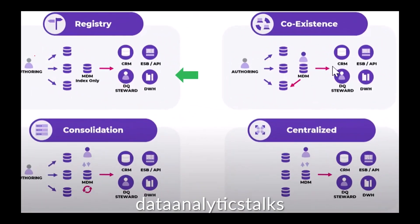Let me focus on the registry hub. We have authoring, we have MDM, and we have different systems — internal or external systems such as CRM, ERP, API, data warehouse, and DQ steward. An MDM system implemented using the registry style provides a read-only view of the master data for downstream. The registry style gives only a read-only view. The MDM hub stores only a thin slice of MDM data — the entire data is not stored in the hub. That thin slice contains source system identifiers, foreign key identifiers, and key attributes needed for matching.